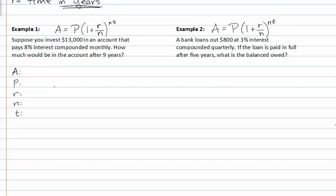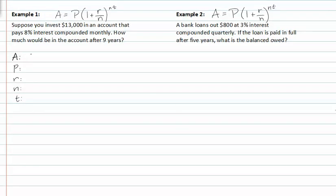A is going to be the amount in the future, so we'll just leave that there. P is $13,000 because that's the amount you invest. It pays 8% interest, that's the interest rate. It's compounded monthly, so the number of times it will be compounded is 12 times a year. It says how much will be in the account after 9 years. Since time is in years, we would just put 9 here.